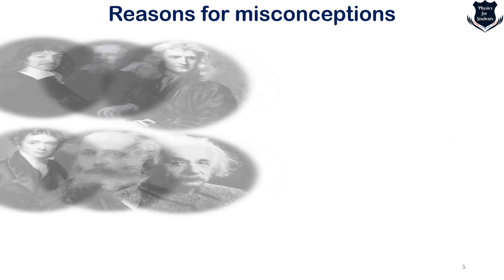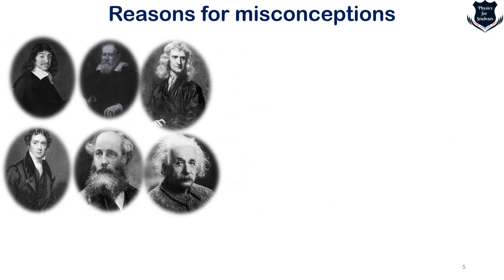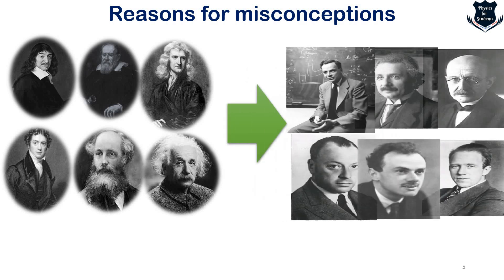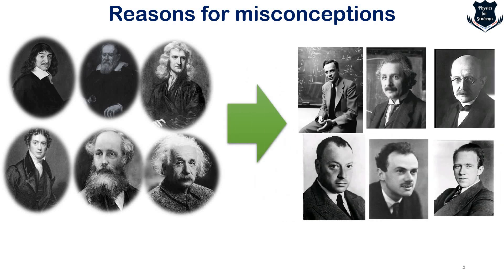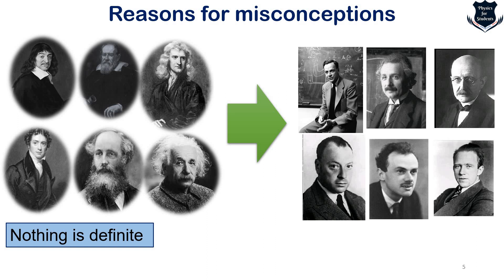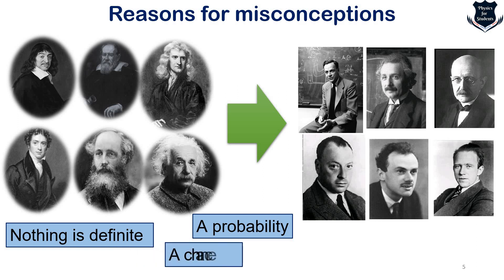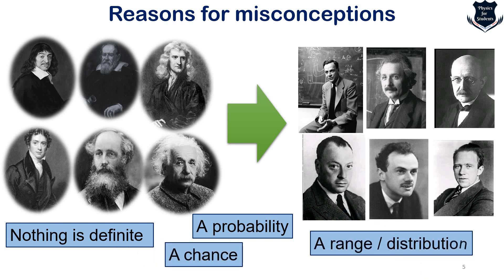Classical determinism leads to quantum probability, which started with Max Planck, then Albert Einstein, Feynman, Dirac, Heisenberg, Max Born and others. What was actually definite now becomes nothing is definite — what we get only is a probability, and we work in a world of chance where a range of distribution or a range of data is given in front of us.